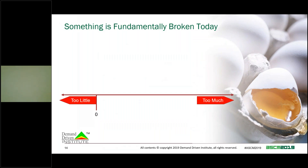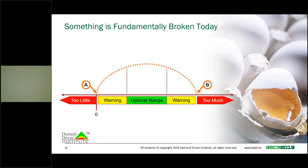Something is fundamentally broken in our world today. There are two universal points of inventory: Point A, where we have too little, and Point B, where we have too much. It doesn't require a huge leap of faith to realize we want to be in between those two points. But determining how much is too little and how much is too much is the struggle we've had for years — and that is the struggle that Demand-Driven brings to the table.